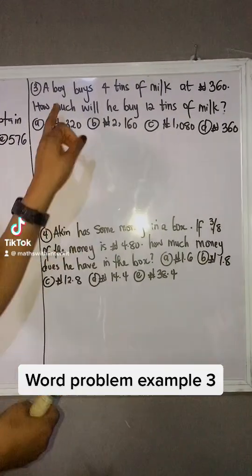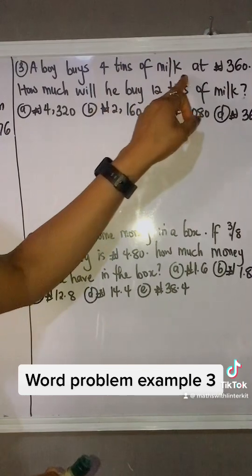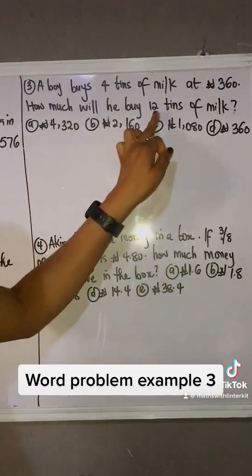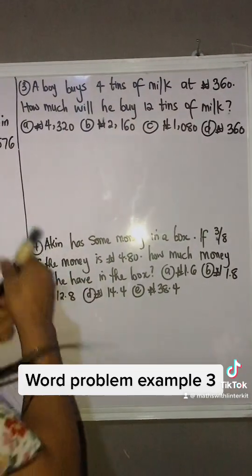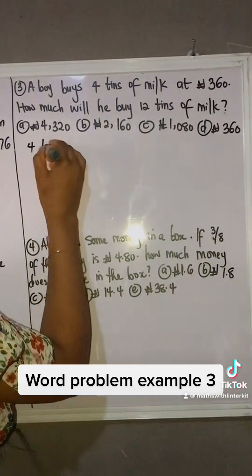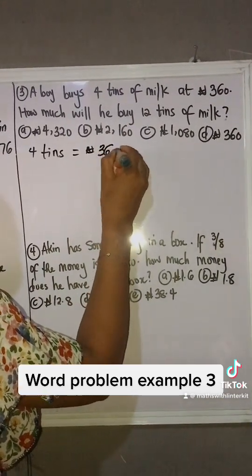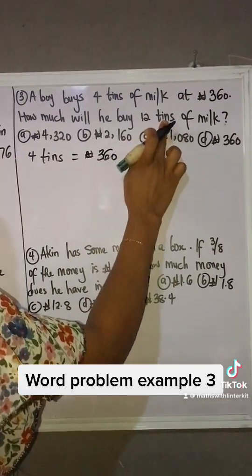We have question three: A boy buys 4 tins of milk at ₦360. How much will he buy 12 tins of milk? Okay, so we have 4 tins is ₦360, 12 tins of milk cost that much.